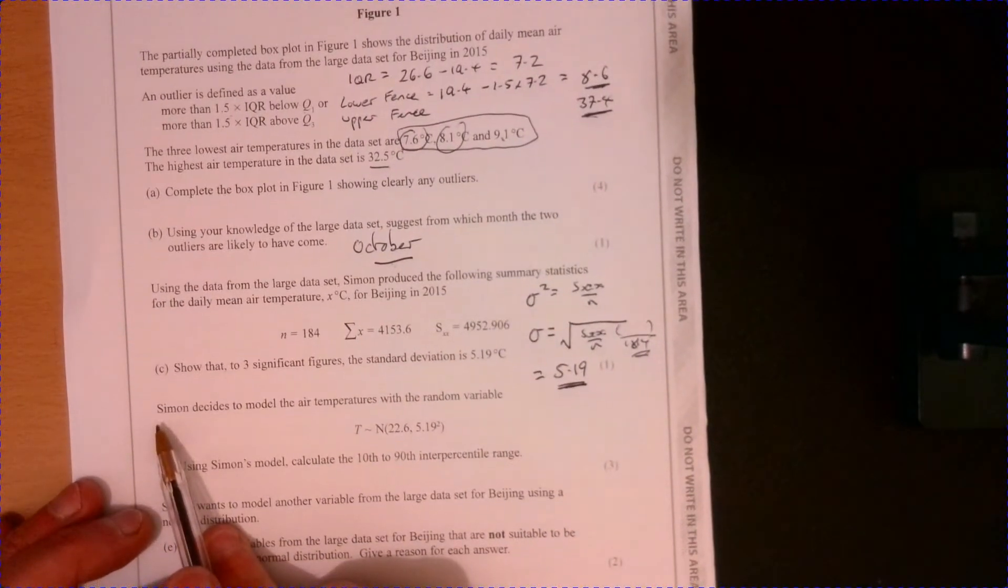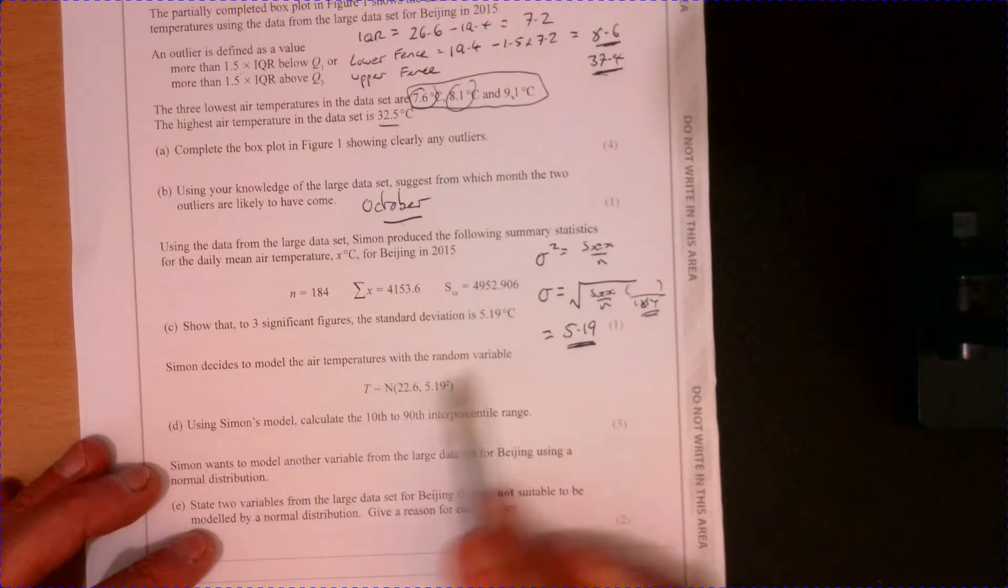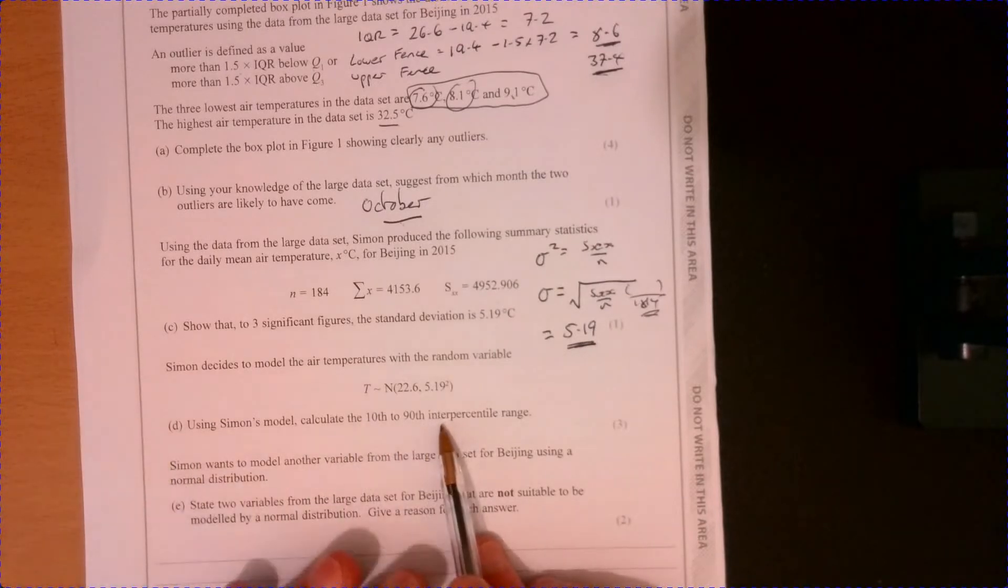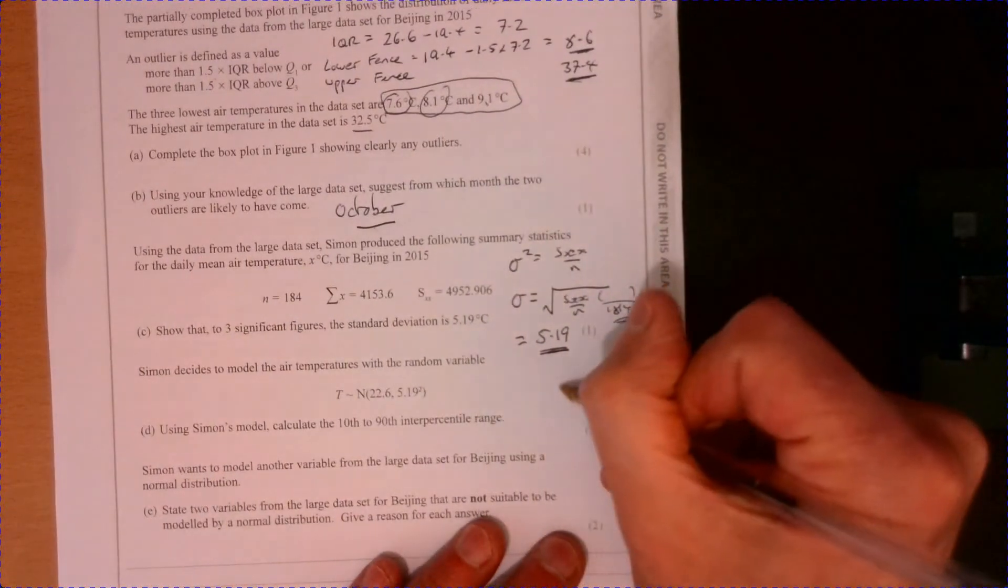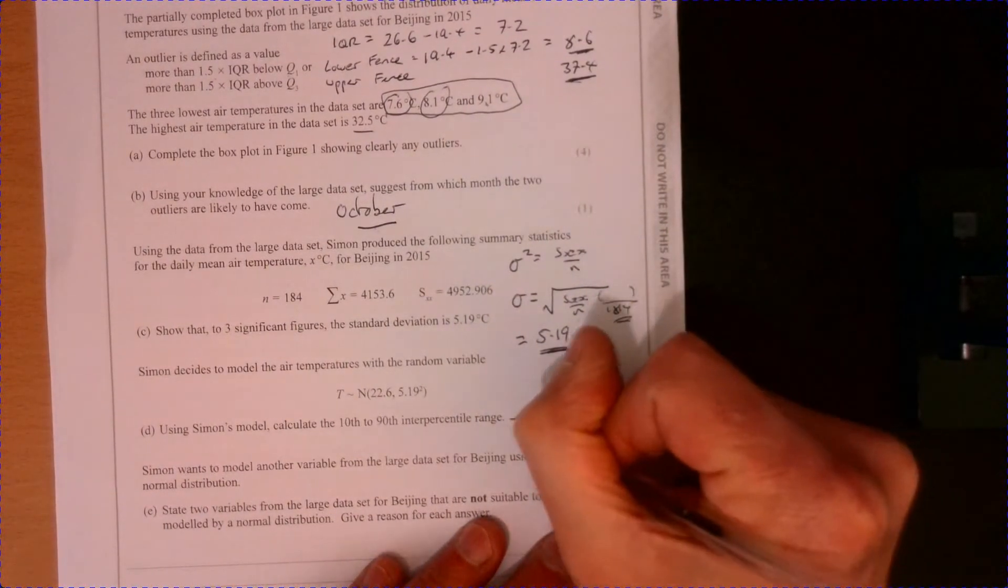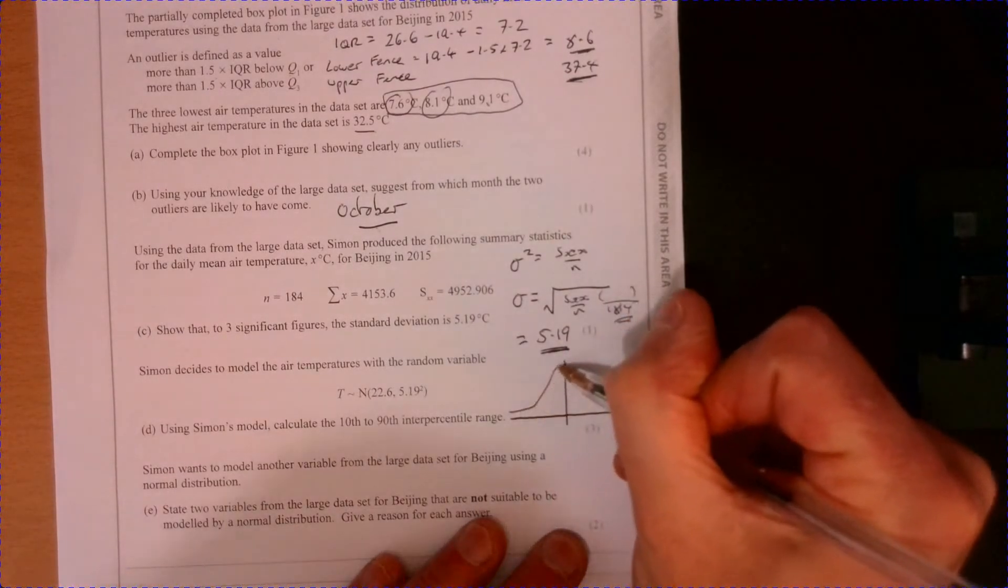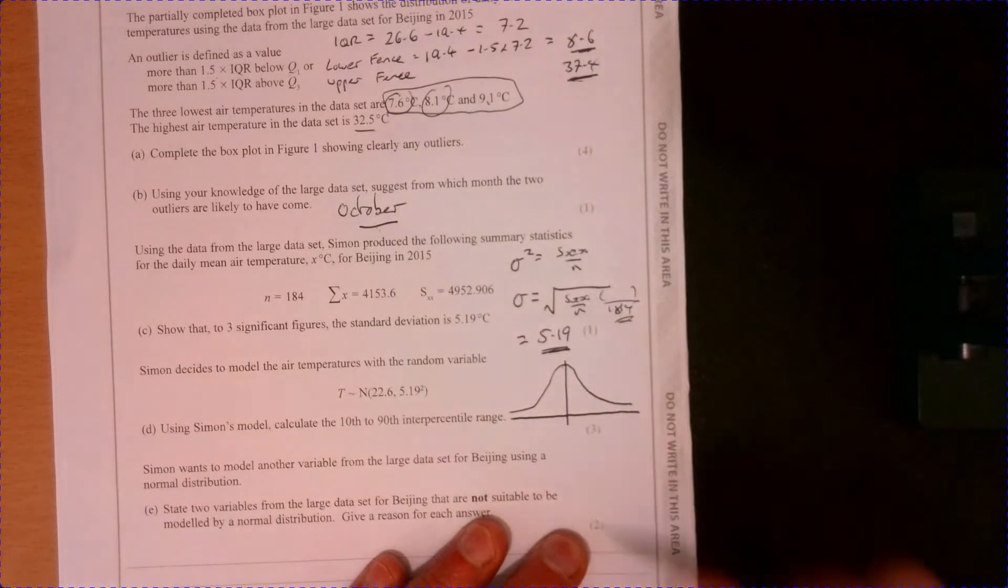Right. Let's have a look at now at part D. So Simon decides to model the air temperatures with a random variable. Using Simon's model, calculate the 10th to the 90th interpercentile range. So what we've got to do here, what we're actually doing is let's just draw a little normal distribution curve just so you can see. So we've got this little bell shape just here. So what are we being asked?